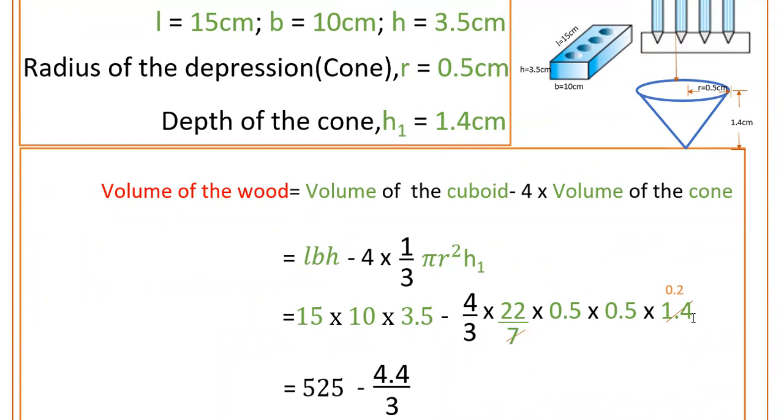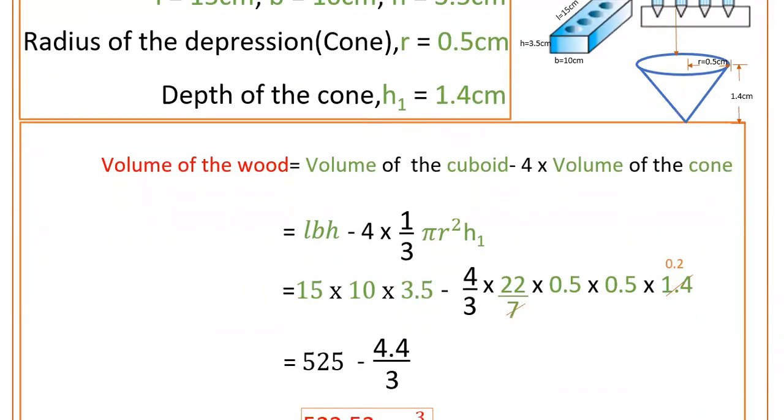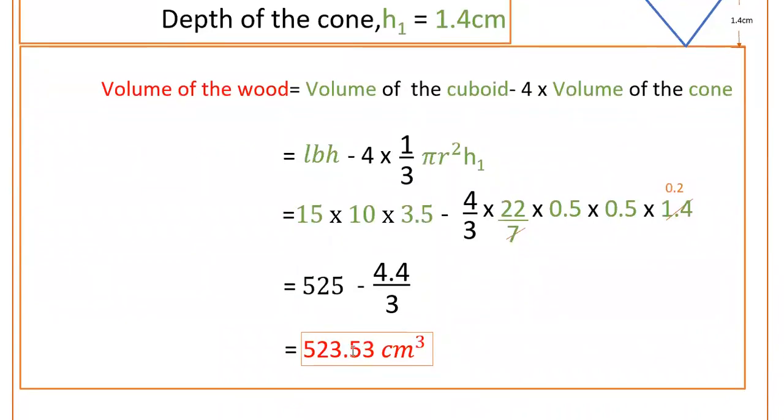So 7 ones are 7, 0.2s are 1.4. If you calculate this you will get 523.53 centimeter cube. This is the volume of the wood.